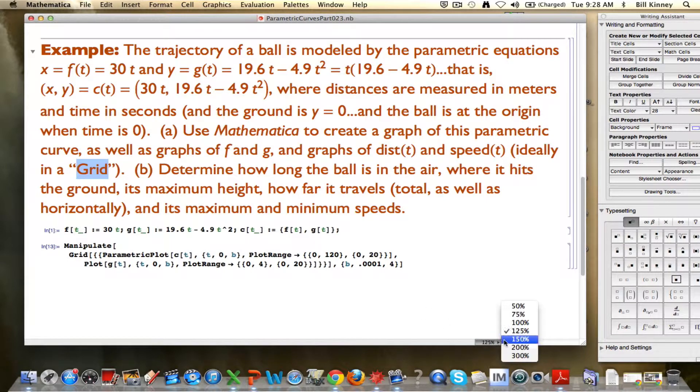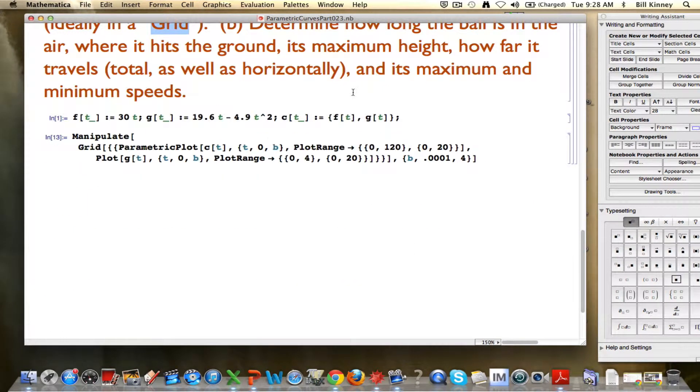So we enter the functions down here. You see we've got f(t) is 30t, g(t) is this, and c(t) is put together in a list in Mathematica. That's going to represent a point. It's also going to represent a vector, a position vector of the point, when I put the first and second coordinate functions into this list, separated by a comma and using curly braces.